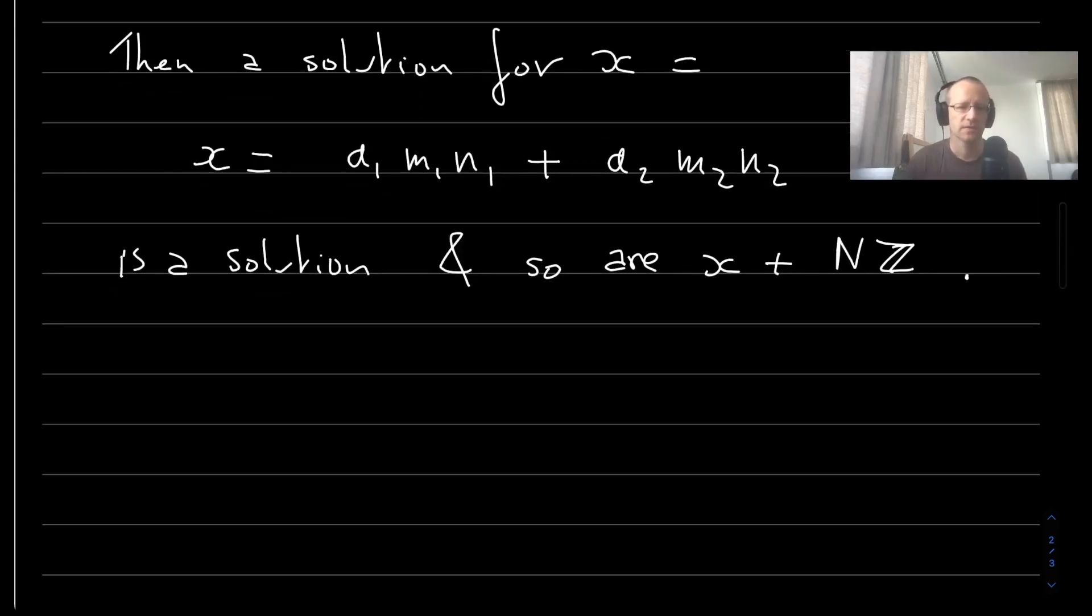Now, why is this a solution? So let's compute x mod n_1. Well, it's equal to 0 plus a_2 times, and then we use our Bézout equation, which says that m_2 n_2 is equal to 1 minus m_1 n_1. So therefore I have exchanged my indices, this should be a_2, a_1, and then this is a_1, such that indeed modulo n_1, we have that this is a_1.